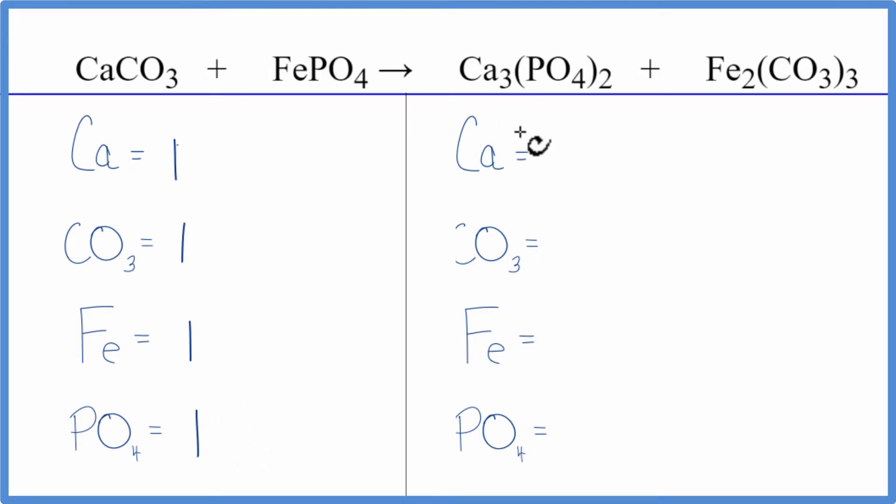On the product side, three calciums, one carbonate times three gives me three of those carbonate ions. Iron, I have two of those. And then phosphates, I have one times two, that gives me two. So you can see we've counted up very quickly using this technique.